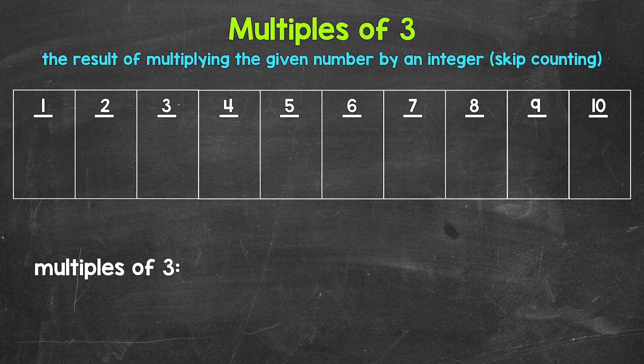So 1 times 3, 2 times 3, 3 times 3, so on and so forth. Another way to think about multiples is to skip count — all of the numbers something is going to hit when counting up by that number, those are all going to be multiples.